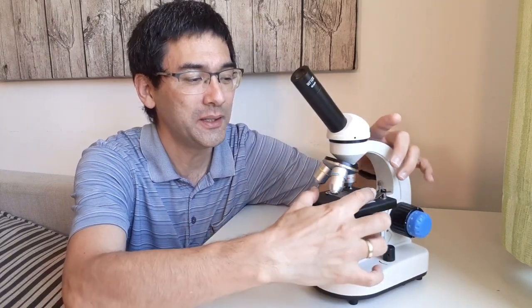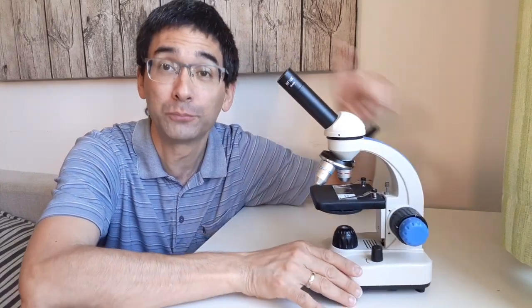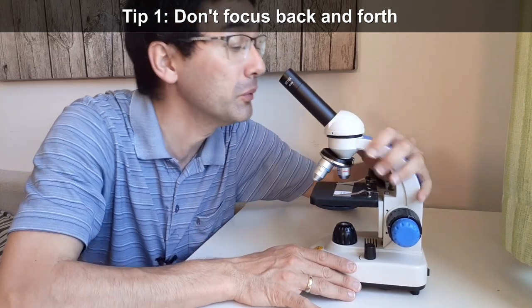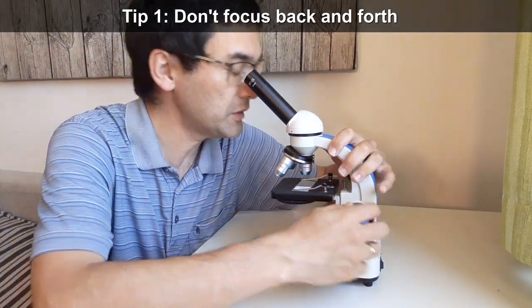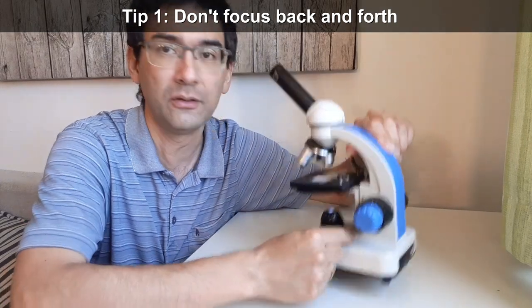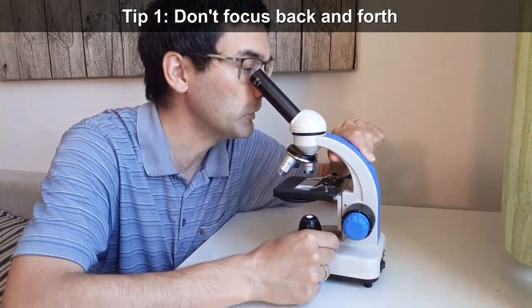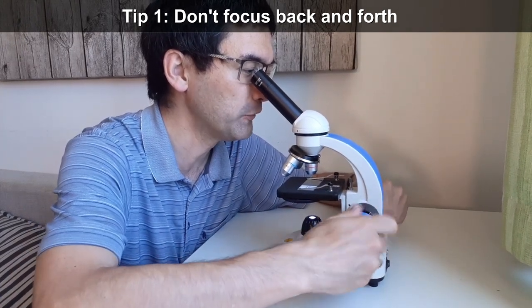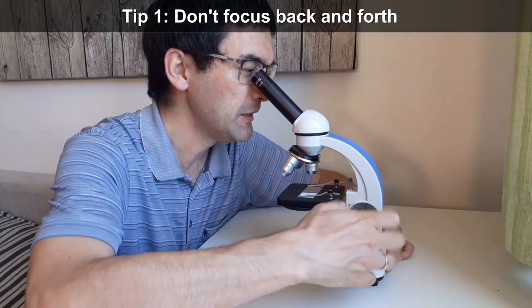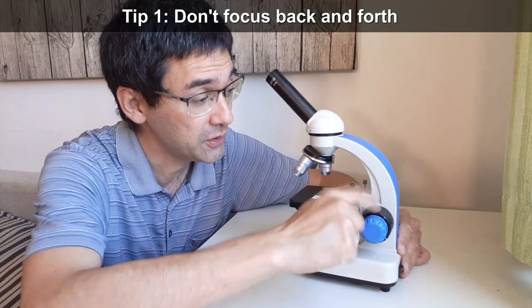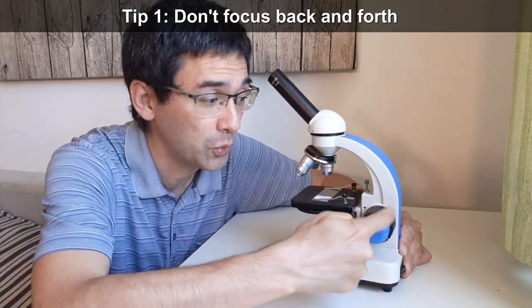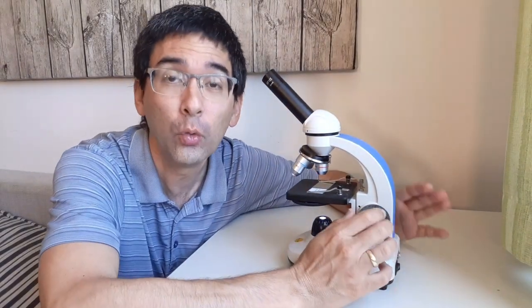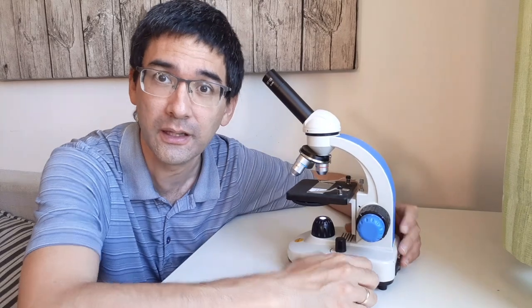And then what I'm going to show you now is problem number one that many beginners make. They look through the eyepiece here and then they turn it on and turn up the light. And then they start turning it into one direction because they want to find the focus. They cannot find the focus, so they keep on turning it into the other direction, but they still can't find the focus. Then they discover that there is also a coarse focus knob, the big one, and then they start doing this. I can't find it. And that's the wrong way of focusing.